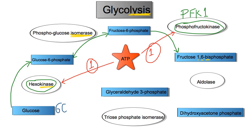Converting fructose-6-phosphate to fructose-1,6-bisphosphate is a committed step in glycolysis — once you pass through this step, you are definitely going through glycolysis. This is also a rate-limiting step. Converting glucose to glucose-6-phosphate using hexokinase is also a rate-limiting step. Whenever we use ATP in a reaction, it's generally going to be a rate-limiting step.